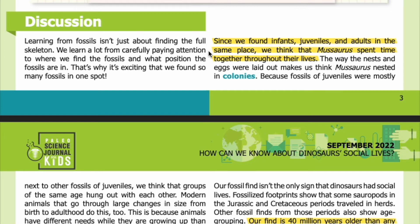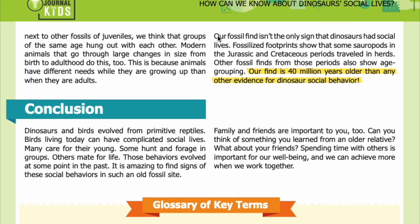Discussion: Learning from fossils isn't just about finding the full skeleton — we learn a lot from carefully paying attention to where we find fossils and what position they are in. That's why it's exciting that we found so many fossils in one spot. Since we found infants, juveniles, and adults in the same place, we think Mussaurus spent time together throughout their lives. The layout of nests and eggs suggests Mussaurus nested in colonies. Because juveniles were mostly next to other juveniles, we think groups of the same age hung out together — modern animals that go through large size changes from birth to adulthood do this too, because animals have different needs while growing up than when they are adults.